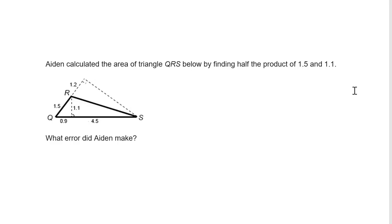Hayden calculated the area of triangle QRS by finding half the product of 1.5 and 1.1. But do 1.5 and 1.1 represent two segments that form a right angle? Here's 1.5 and here's 1.1 — they come together right here, making that angle right there.